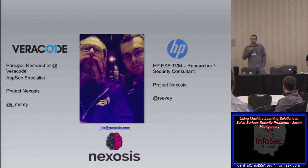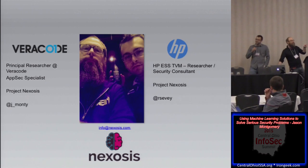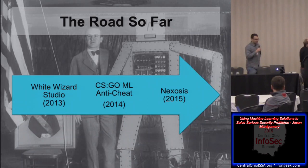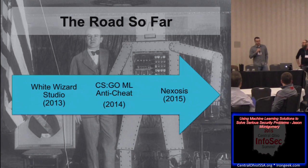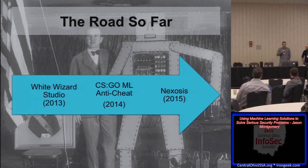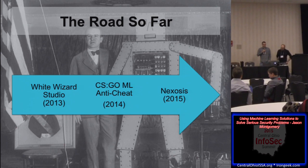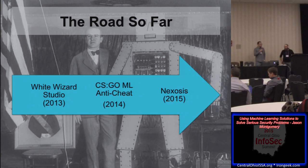Did anyone here see our DerbyCon talk where we used machine learning to make a video game anti-cheat? We did that in 2014. From that, we kind of spun it off. A lot of the feedback we got was: how do we apply this to InfoSec, and what can it do? So this year we started a new project called Project Nexosis, where we're basically trying to solve a lot of security issues using different methods of machine learning.